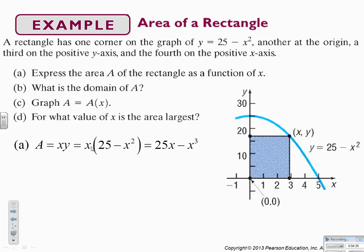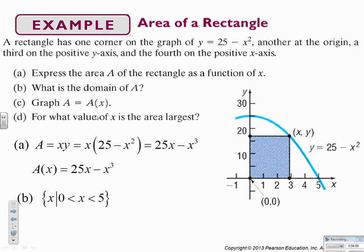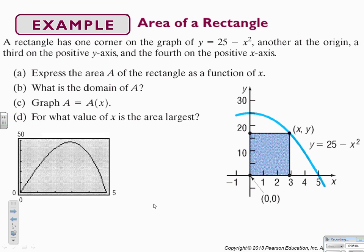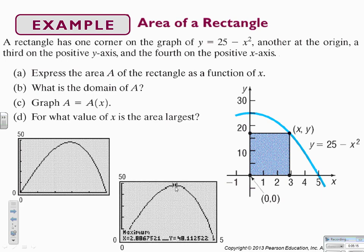We know that y equals 25 minus x squared, so we multiply that out and get 25x minus x cubed. The domain of A is between 0 and 5, because once you hit 5 you are no longer in the rectangle range. Here's the graph of our area function, and we find the maximum is at x equals 2.8867, which will make the area the largest — right about at 2.888.